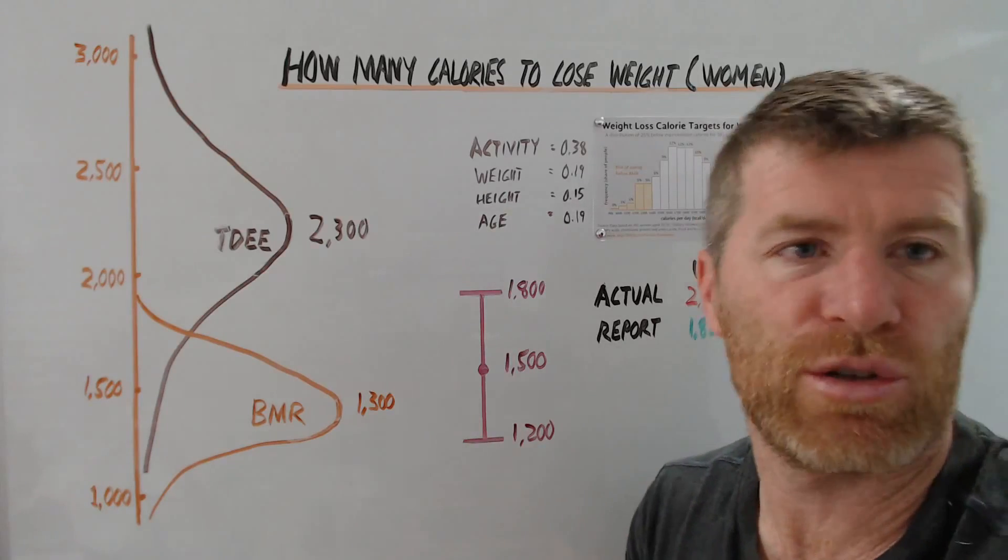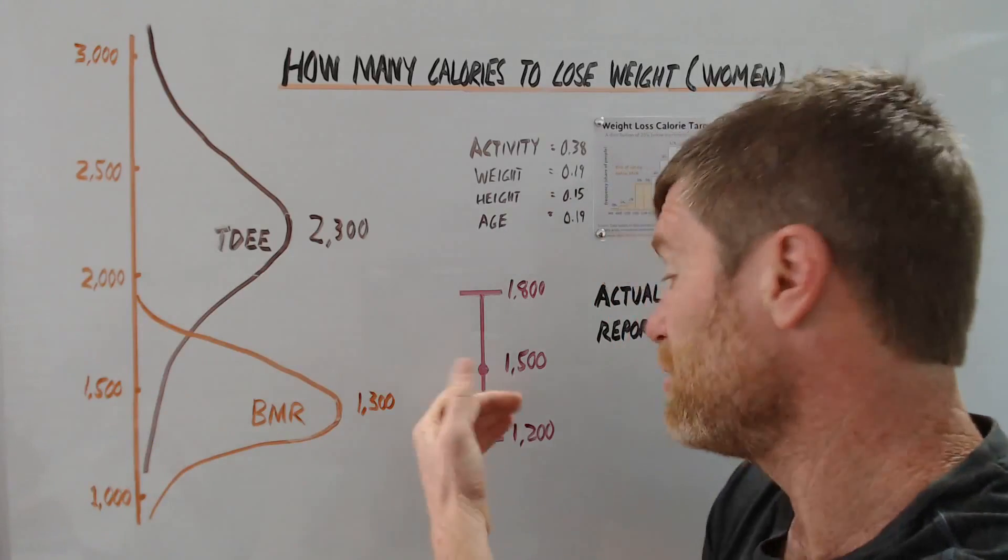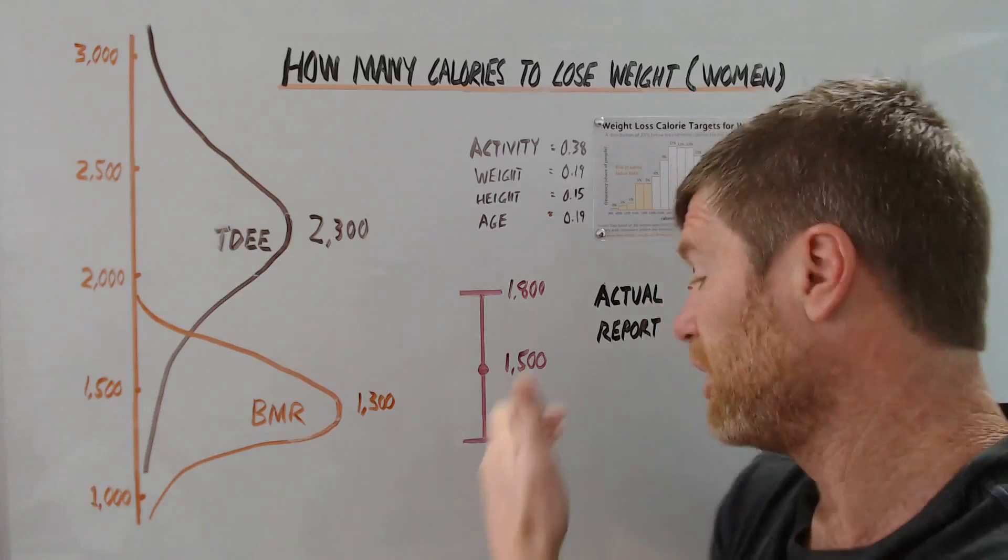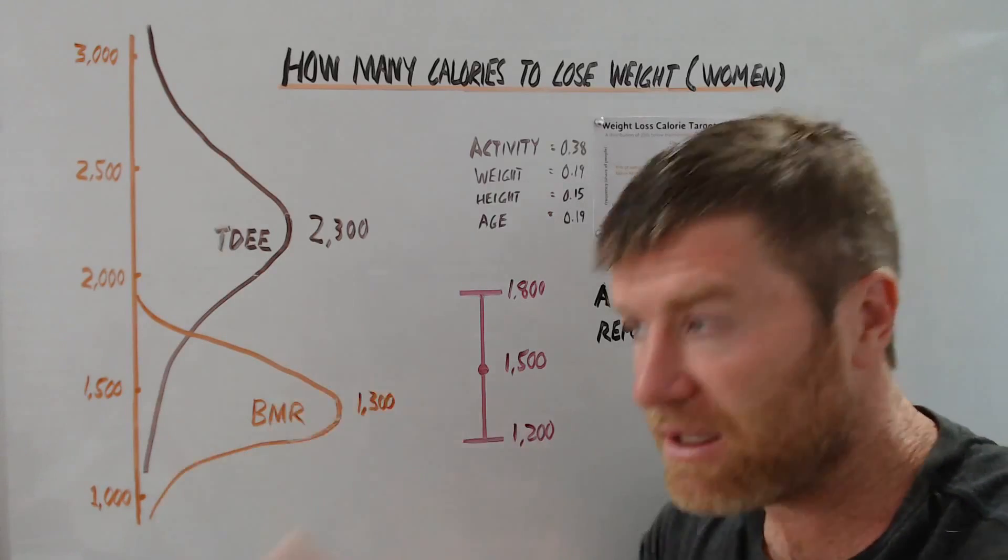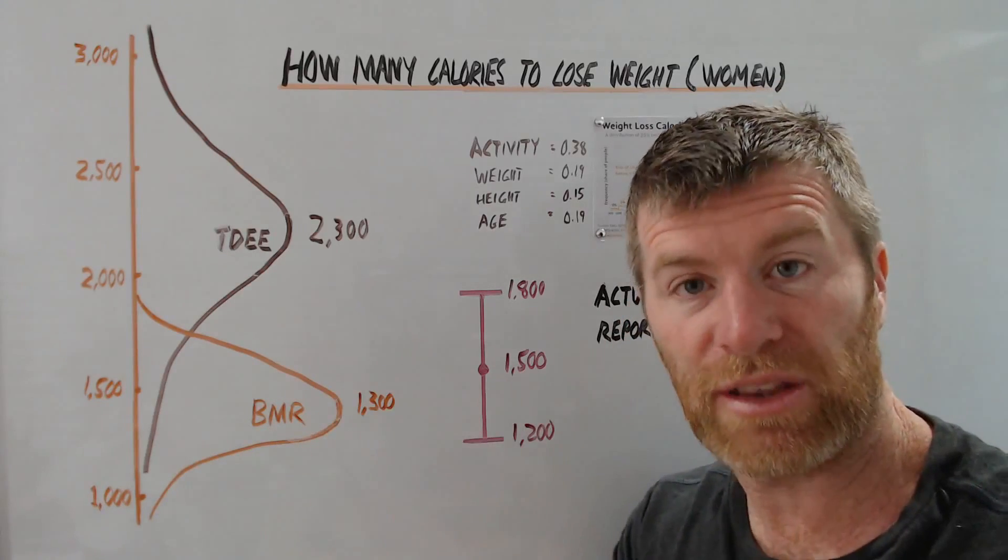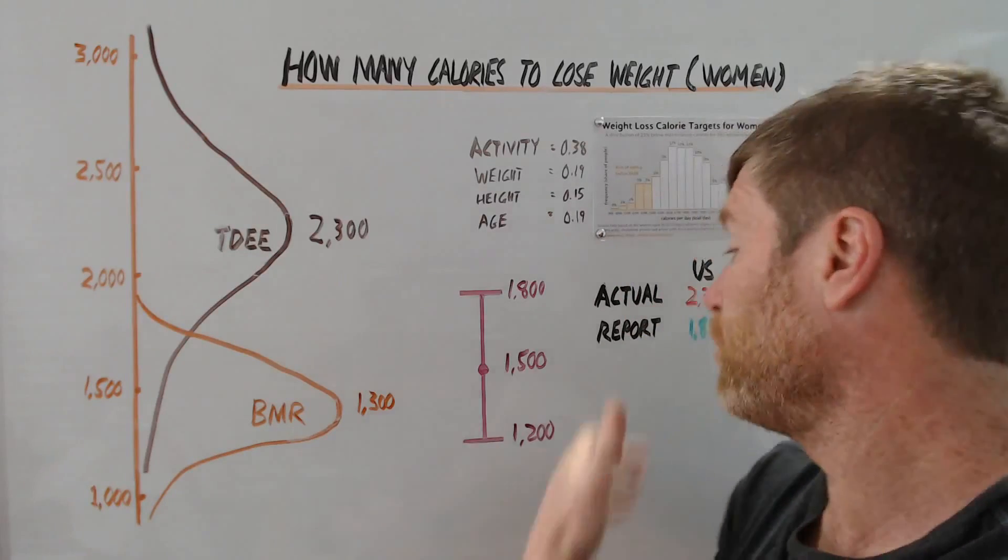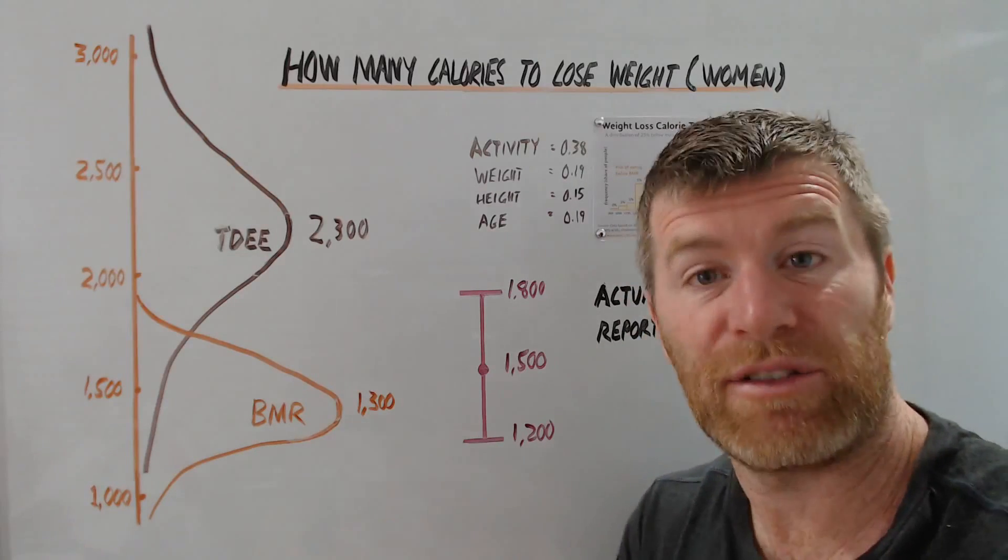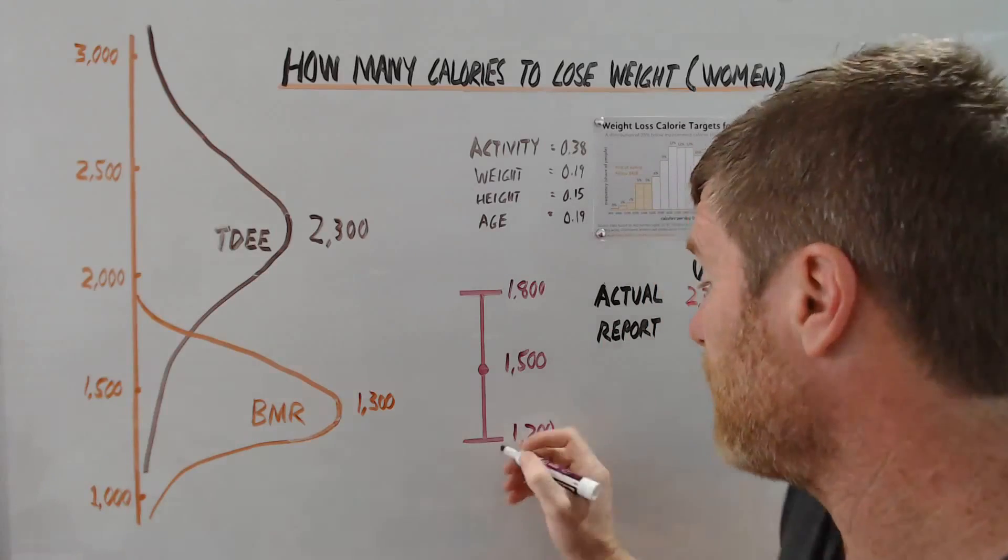You can obviously go down below 1,200. There are tons of interesting studies. You lose weight faster. If you're really aggressive, you will lose weight faster. It is just a question of whether you'll thrive down there, whether you'll be able to sustain it and whether it will work out for you in the long run. But for some people, that can be done.